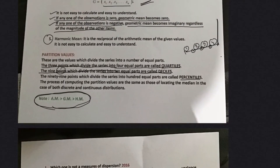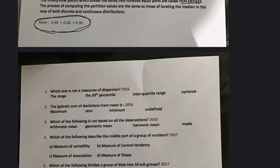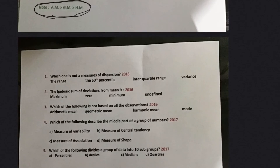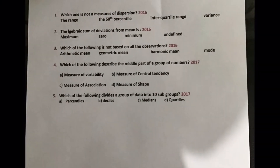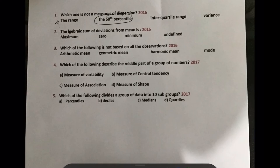Let's look at some questions. Question: which one is not a measure of dispersion? We haven't covered measures of dispersion yet, but from what we've studied on measures of central tendency, note that the 50th percentile is not a measure of dispersion — it is a measure of central tendency, since percentiles divide a series into 100 equal parts.